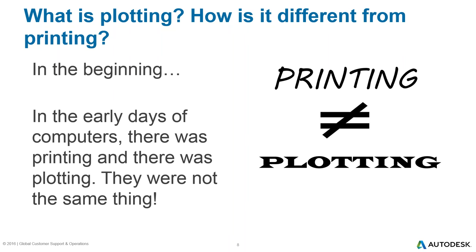Long ago, in the early days of computers, printing and plotting were definitely not the same thing. Early computer printers were essentially automated typewriters — electric typewriters hooked up to a computer. But for blueprints, architectural designs, schematics, PCB layouts — things requiring lines, circles, arcs, and vector output — we had plotters, specifically pen plotters, since back then those were the only kind.